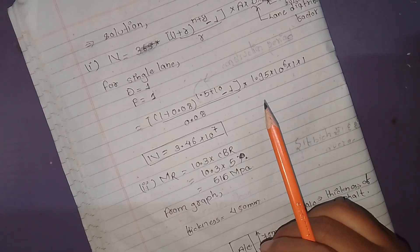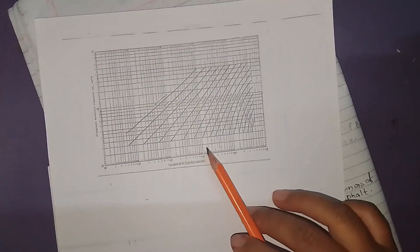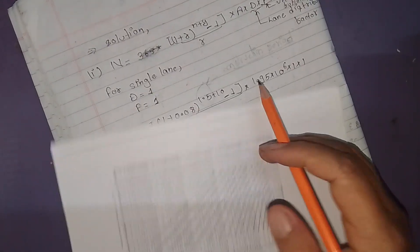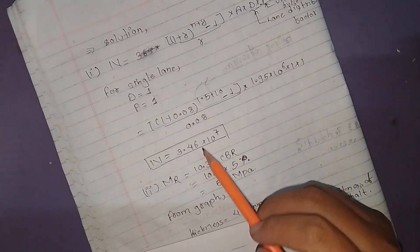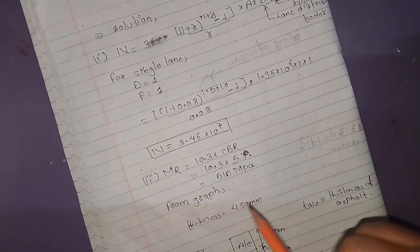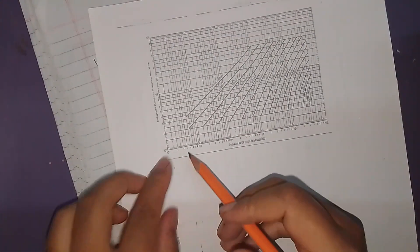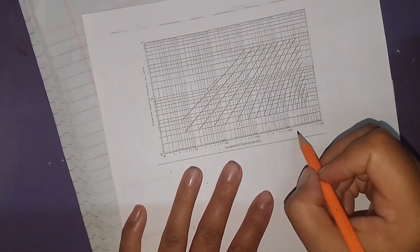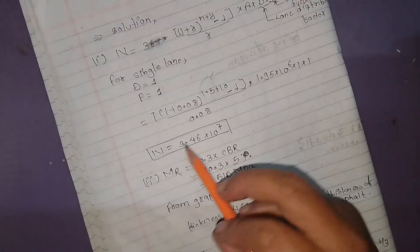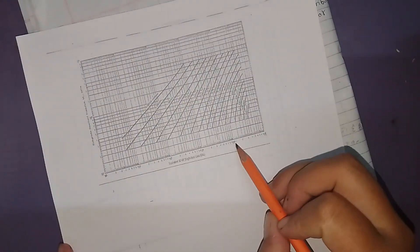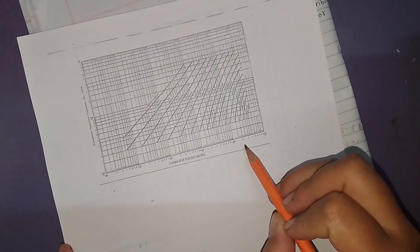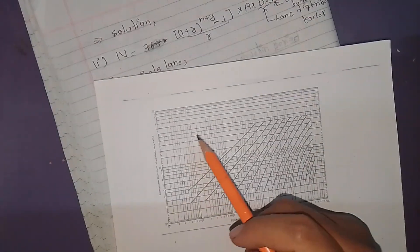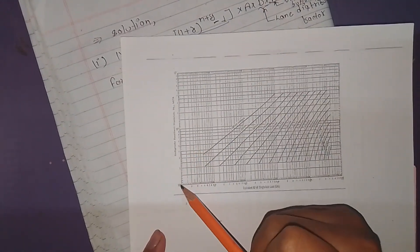Now we have to look at this graph. The X-axis value is 3.46 × 10^7 and the Y-axis value is 51.5 MPa. Reading the graph, we can see values at 10^3, 10^4, 10^5, 10^6, and 10^7. The graph reading gives us 3.46 × 10^7 on the X-axis.